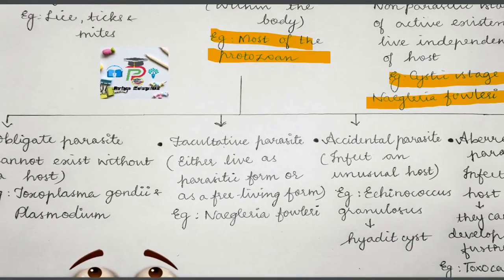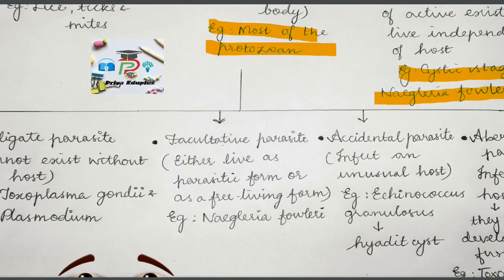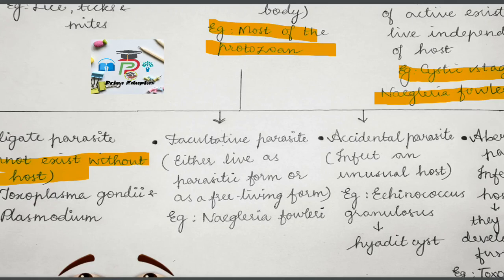Endoparasites are further classified as obligate parasites, facultative parasites, accidental parasites, and aberrant parasites. Obligate parasites are parasites which cannot exist without a host; they can live only in the presence of a host. When they come out of the host, they will die. Examples are Toxoplasma gondii and Plasmodium.